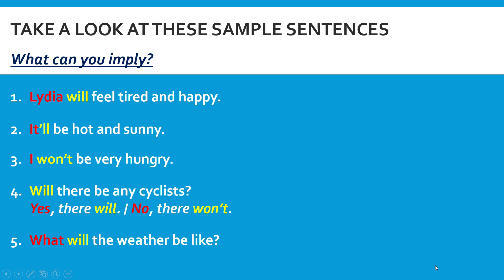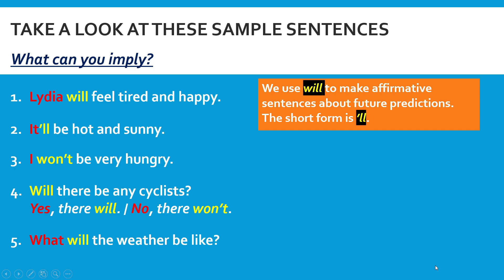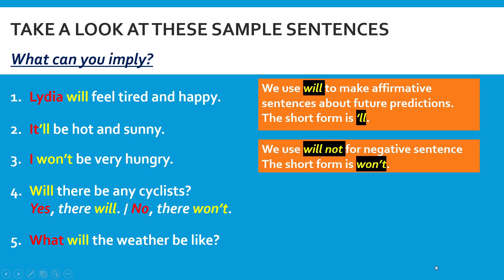Based on the sample sentences you have read through, what are the implications you can make? First, we use 'will' to make affirmative sentences about future predictions. The short form for 'will' is apostrophe 'll'. You can either use 'will' or subject pronoun together with apostrophe 'll'. Next, we use 'will not' for negative sentences. The short form is 'won't'. So 'will' is for affirmative sentences and 'will not' or 'won't' is for negative sentences.